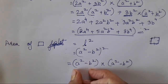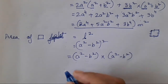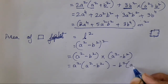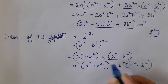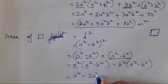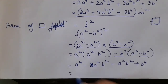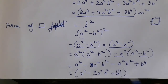Expand a² plus b² whole squared: write it twice. It becomes a² minus b² into a² minus b² — using the formula. So: a² into a² minus a² into b² minus b² into a² plus b⁴. This gives a⁴ minus 2a²b² plus b⁴ metre square.